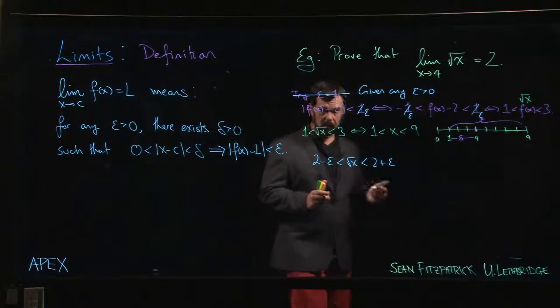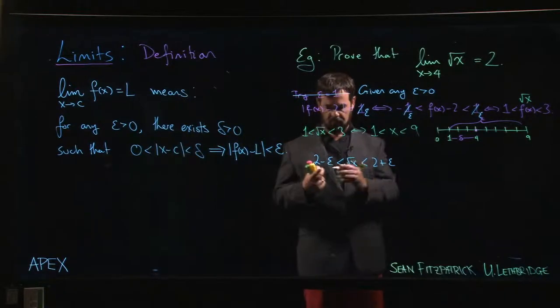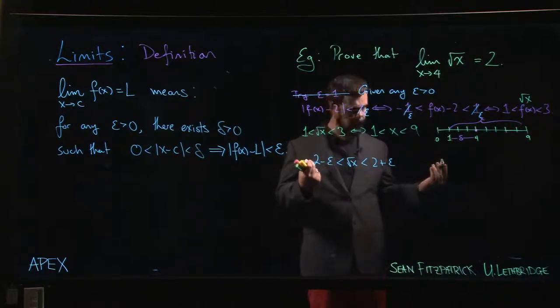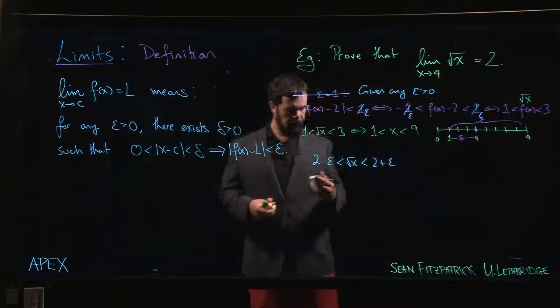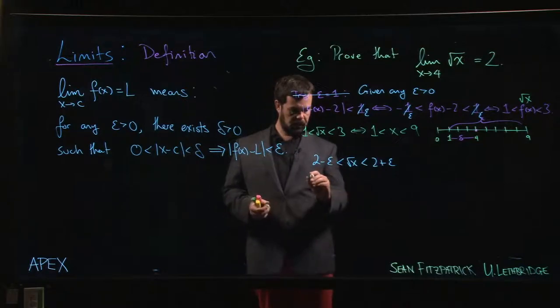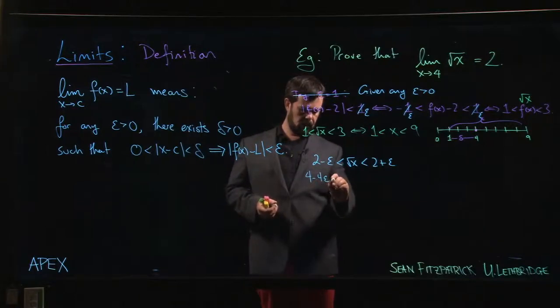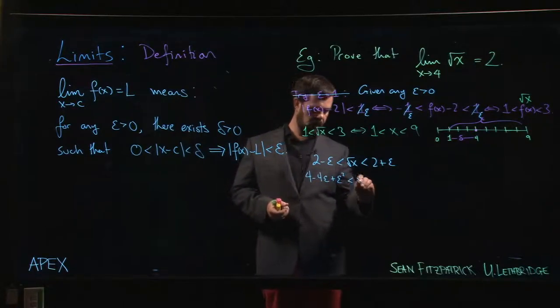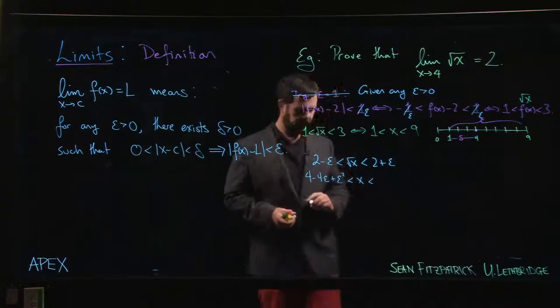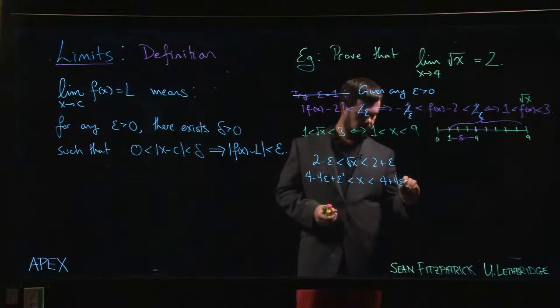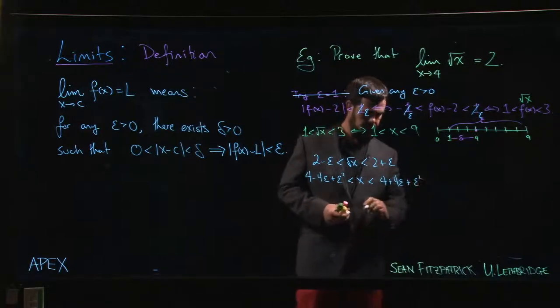So everything's now in terms of this epsilon rather than, you know, so I can't actually simplify the number. I'm stuck like that. But I could still square everything. So I can square everything, and that's going to give me 4 minus 4 epsilon plus epsilon squared less than x less than 4 plus 4 epsilon plus epsilon squared.